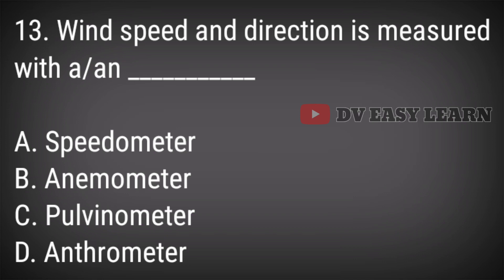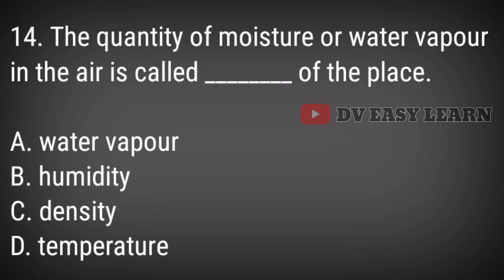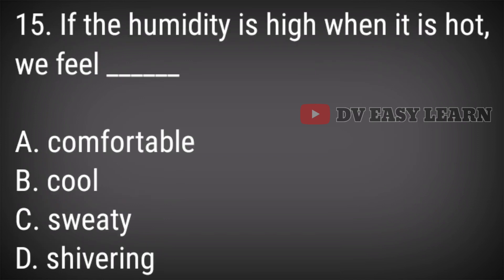Question 13: Wind speed and direction is measured with? Answer: Anemometer. Question 14: The quantity of moisture or water vapor in the air is called what of the place? Answer: Humidity.